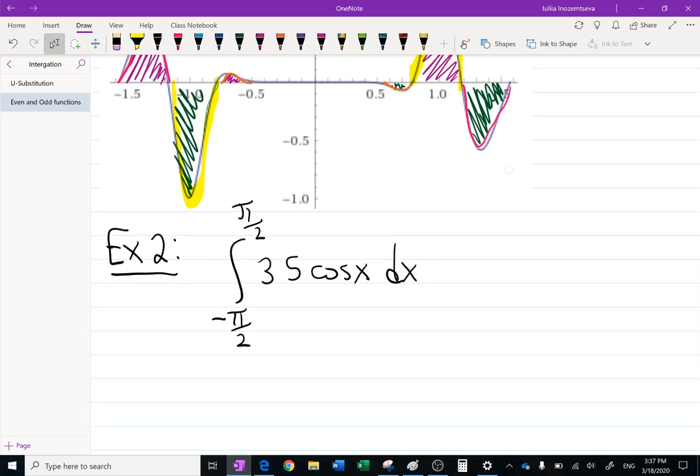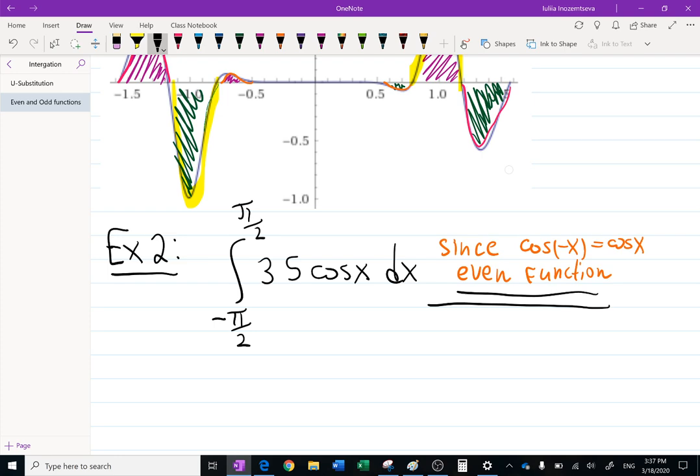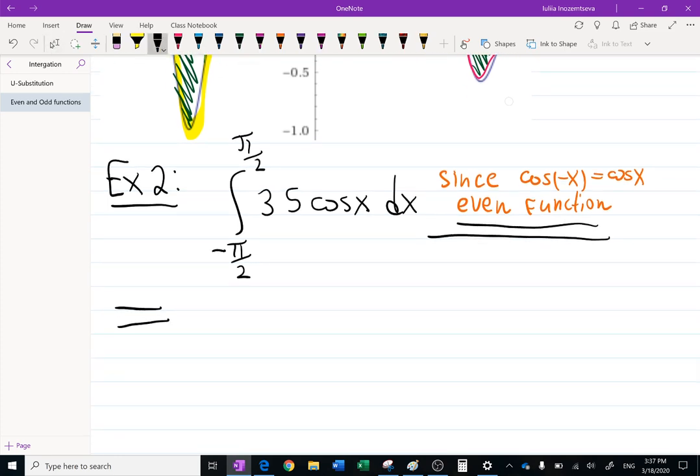35 cosine x dx. Do we have to integrate from negative pi over 2 to pi over 2? Not really. We can say that since cosine of negative x is cosine x, which makes it an even function, I can put a huge equal sign and write down this integral only from zero to pi over 2. 35 cosine x dx. And what is going to be different? 2 in front of it. That's the property I mentioned at the beginning.